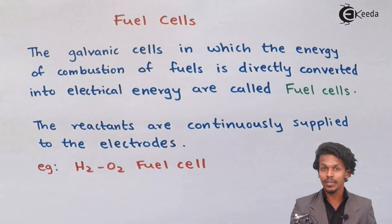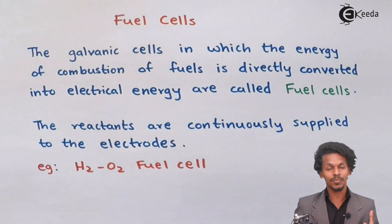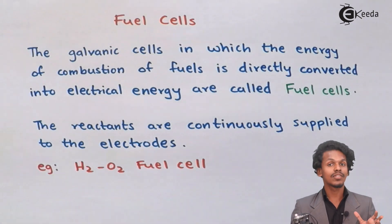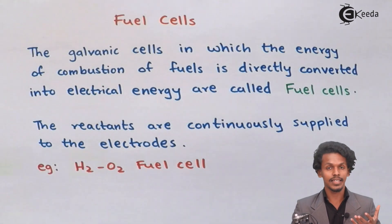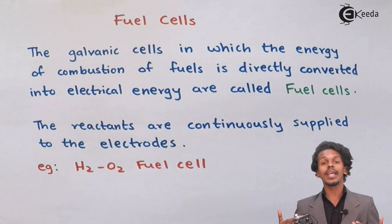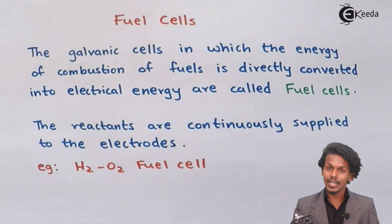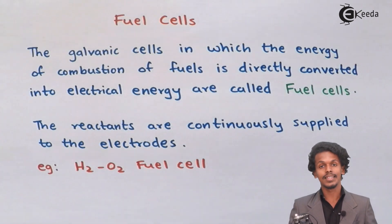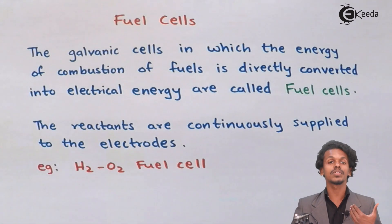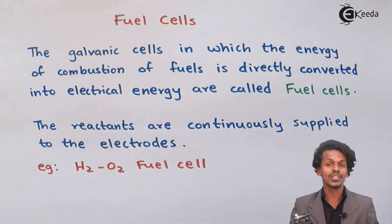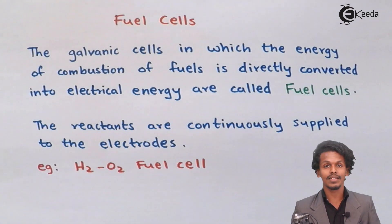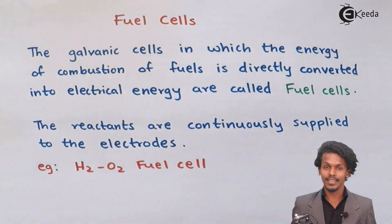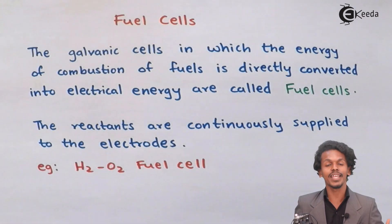In a fuel cell, there is a continuous flow of fuels and the electrolyte is not in limited supply. The more fuel and electrolyte we provide, the more electricity the cell can produce. Unlike a Daniel cell, there is no limitation on the chemical reagent — we keep supplying more reactants to generate electricity.